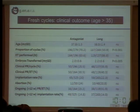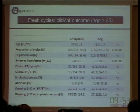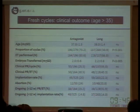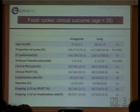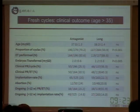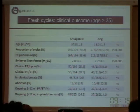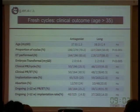In the older patient group, age more than 35, there was a significantly higher proportion using the antagonist protocol compared to the long protocol. The clinical pregnancy rate per cycle was 25% versus 35%, and per embryo transfer was 30.5% versus 40.3%. The implantation rate was comparable, as was the ongoing implantation rate, meaning that the potential evolution of the embryos obtained was absolutely comparable between the two groups.